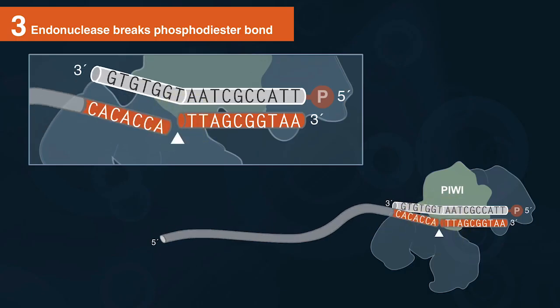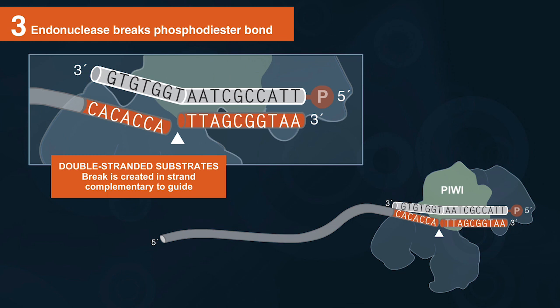With a prokaryotic Argonaut, that single guide is only cutting opposite of its complementary sequence. So there's only one cut. In the case of a double-stranded substrate, you'd just be using it like a nickase, almost like the D10A nickase Cas9 that we sell.